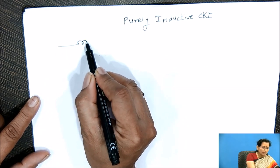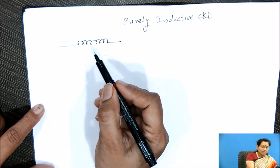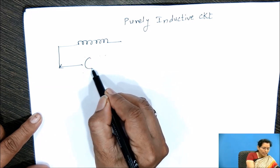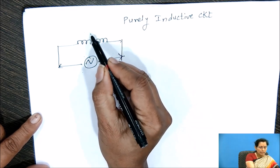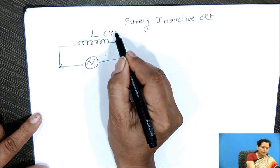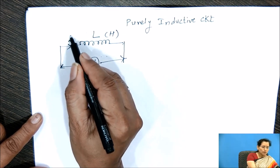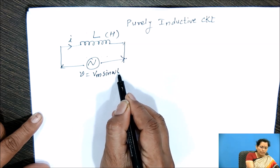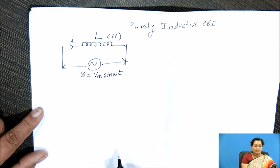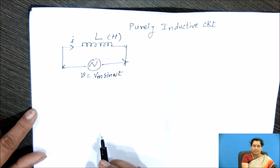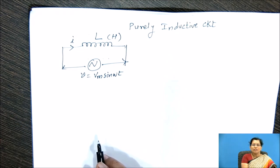if we consider inductance — this is the symbol of inductance. If AC voltage is connected to this inductance, inductance L is measured in Henry. Current I flows through this circuit; V equal to Vm sin ωt is the AC voltage connected across this pure inductive circuit. Pure inductance means here we are going to consider the resistance for this inductor is 0.